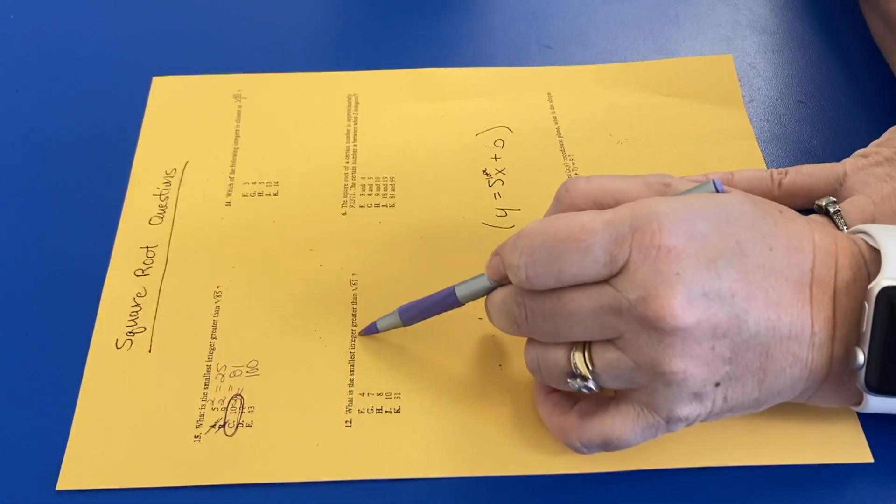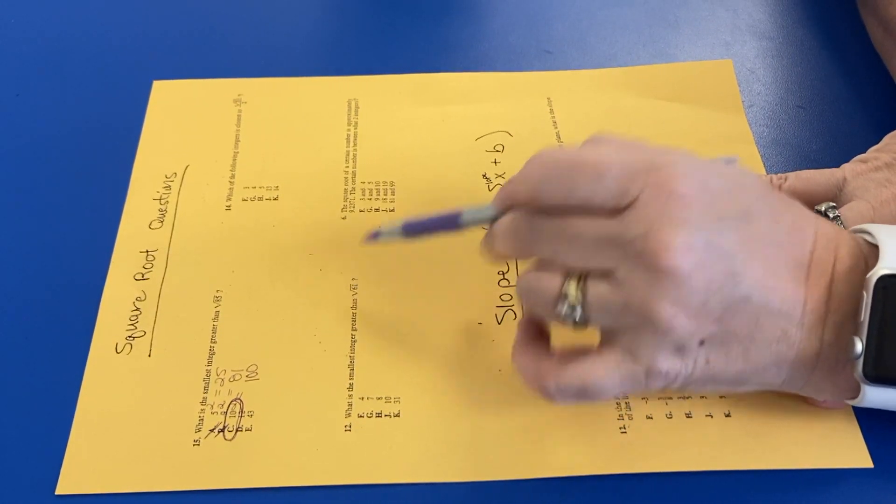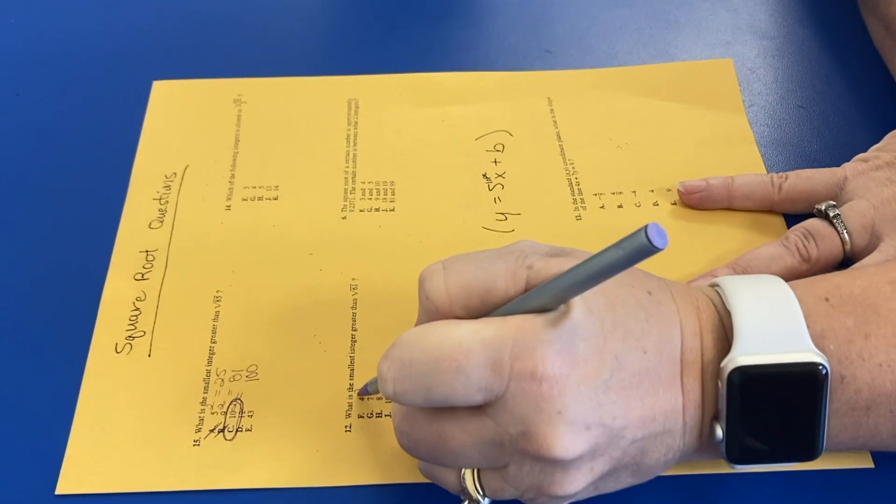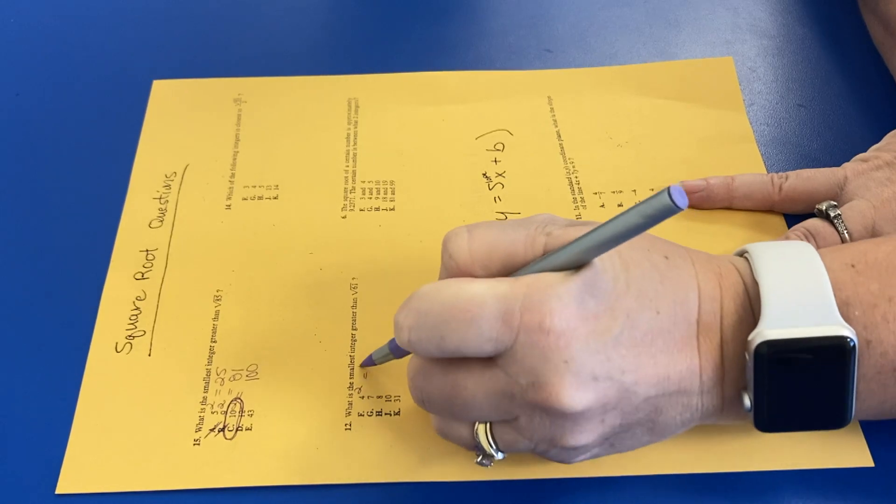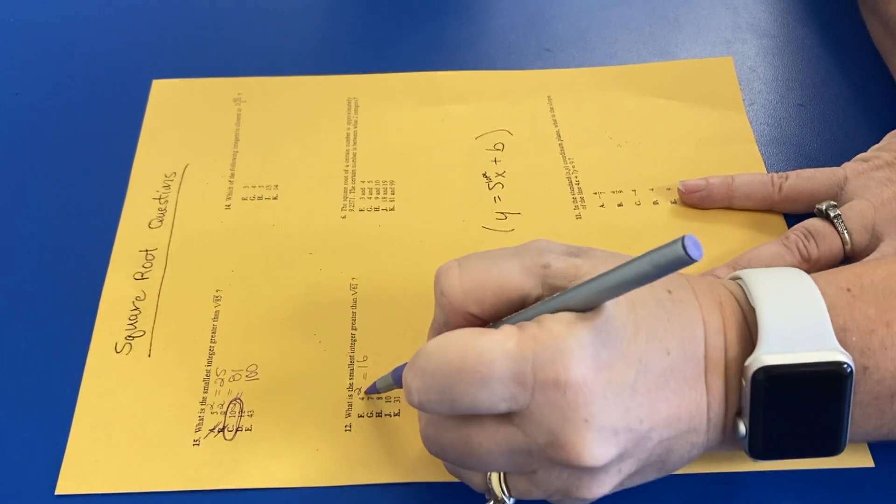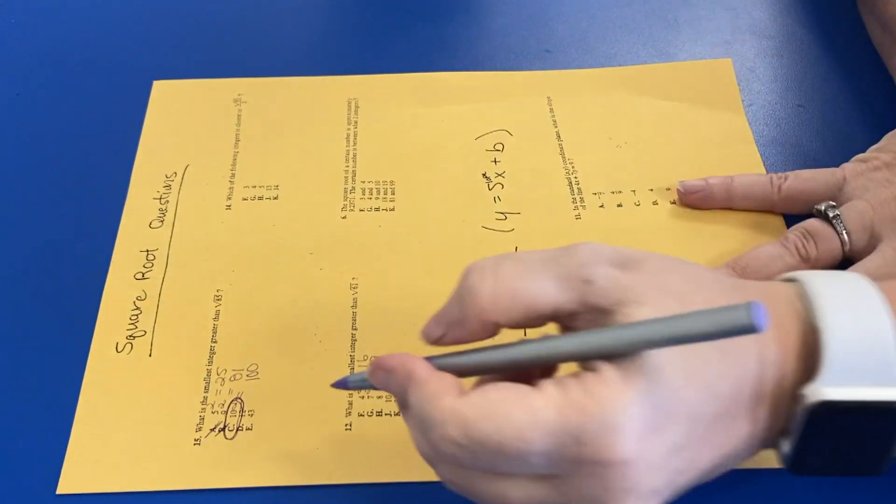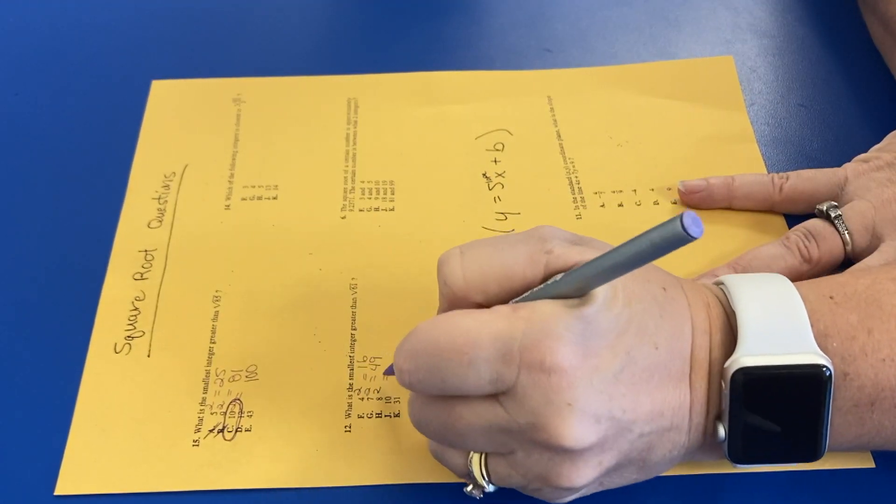All right, so what is the smallest integer greater than square root of 61? So again, it's the same thing. So 4 squared is 16. 7 squared is 49. We're still not up there, are we? 8 squared is 64.